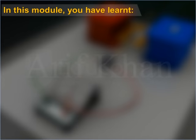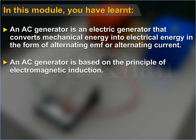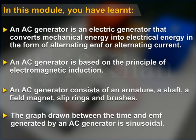In this module you have learned: an AC generator converts mechanical energy into electrical energy in the form of alternating EMF or alternating current. It is based on the principle of electromagnetic induction. An AC generator consists of an armature, a shaft, a field magnet, slip rings, and brushes. The graph between time and EMF generated by an AC generator is sinusoidal.